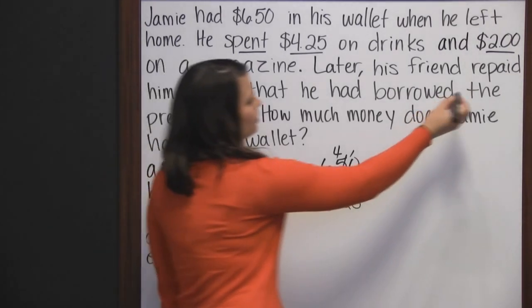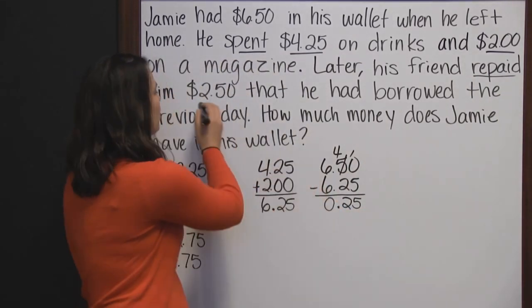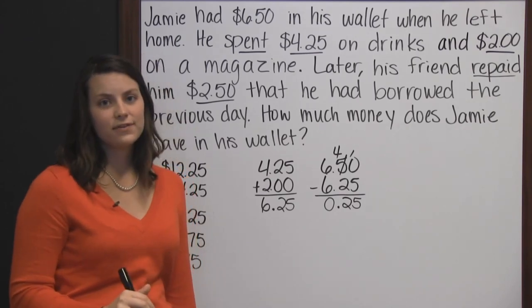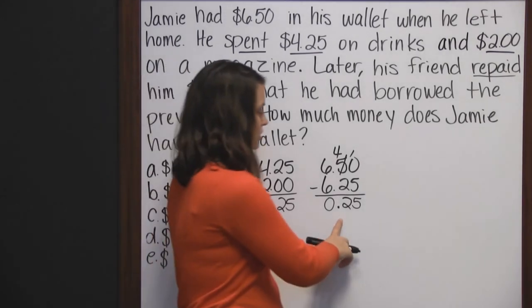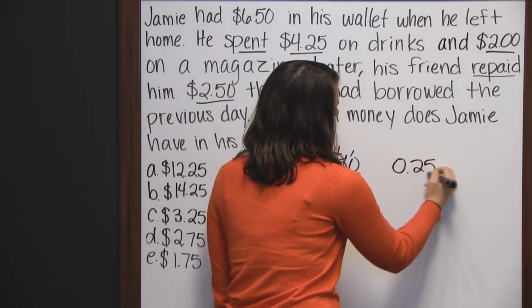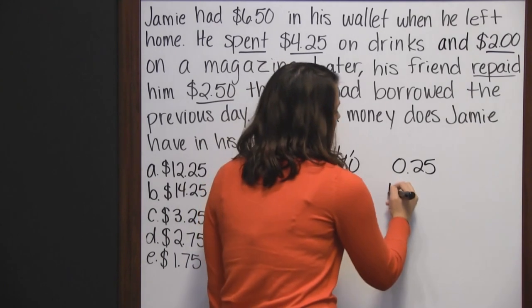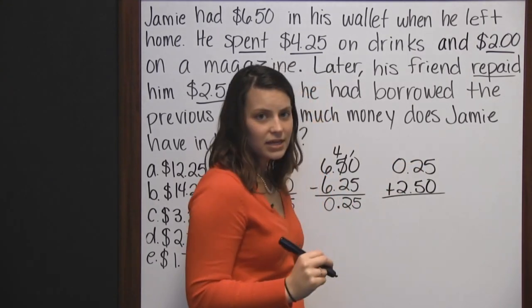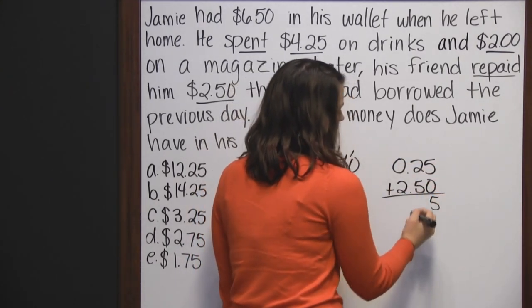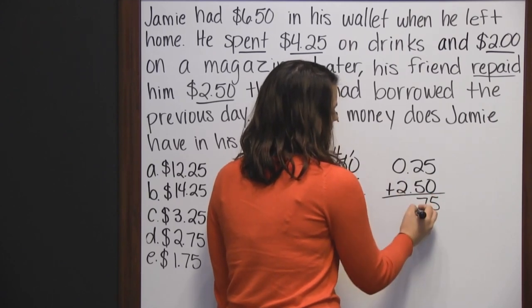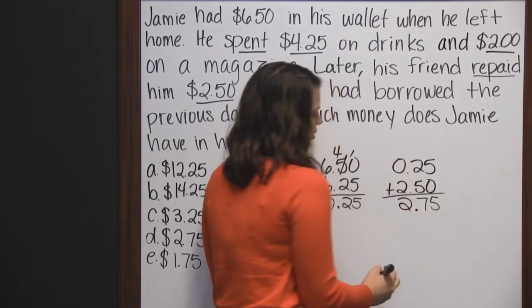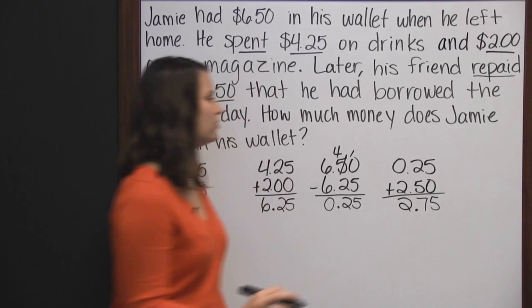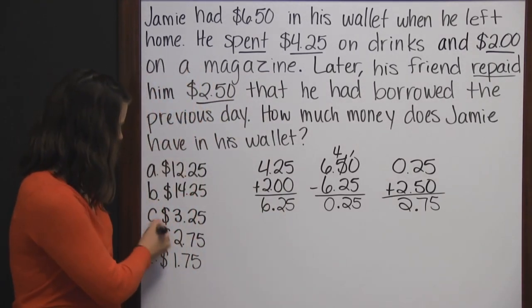But his friend repaid him two dollars and fifty cents, which means that money is added to his total. So I take what he had after spending and add the money his friend gave him. Lining up the decimals: five plus zero is five, two plus five is seven, bring down the decimal, zero plus two is two. After spending money and getting repaid, he now has a total of two dollars and seventy-five cents — answer D.